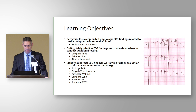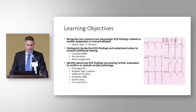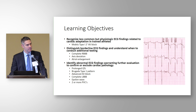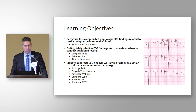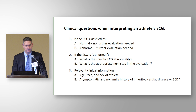Our learning objectives this morning: recognize the less common but still physiologic ECG findings related to cardiac adaptation in trained athletes, specifically Mobitz Type 1 second-degree AV block. We'll distinguish borderline ECG findings and understand when to conduct additional testing. We'll also identify abnormal ECG findings warranting further evaluation, including prolonged QT, Brugada, advanced AV block, left bundle branch block, epsilon waves, and PVCs.